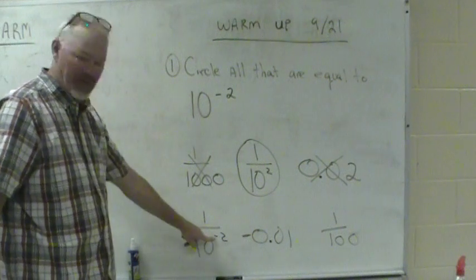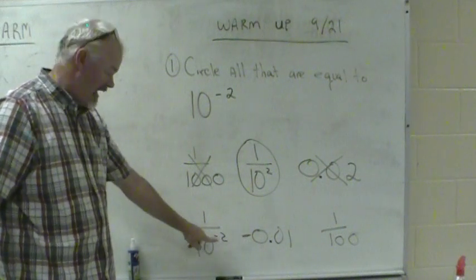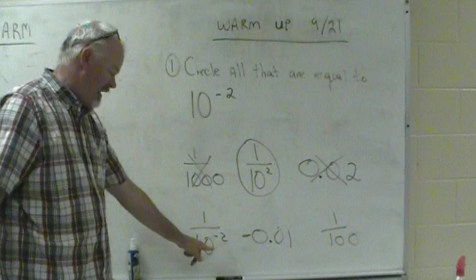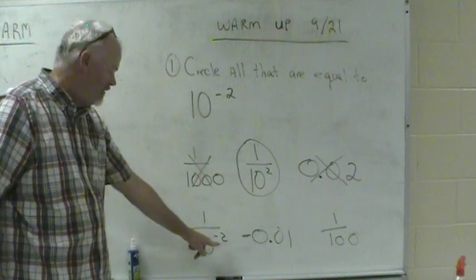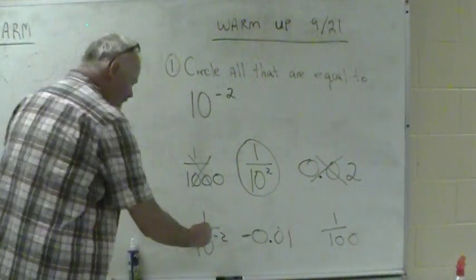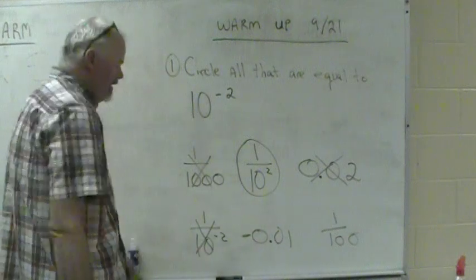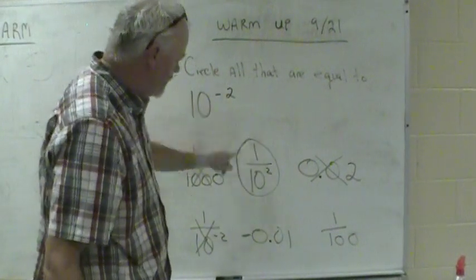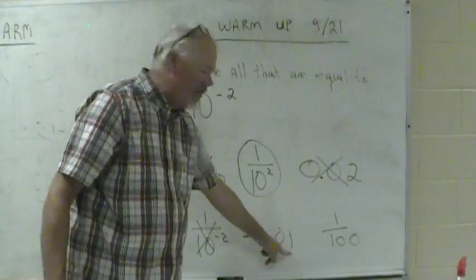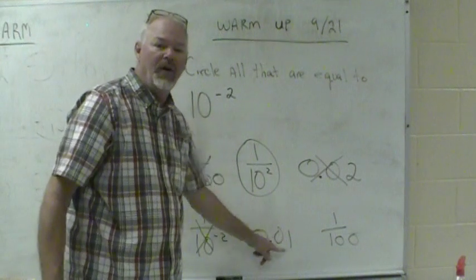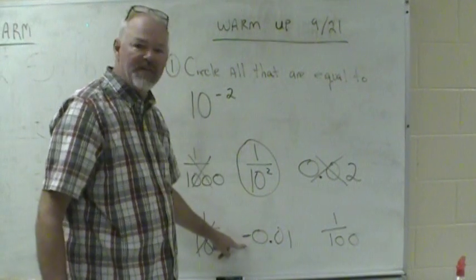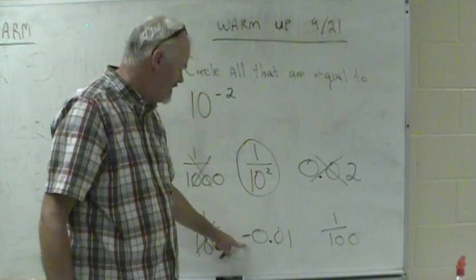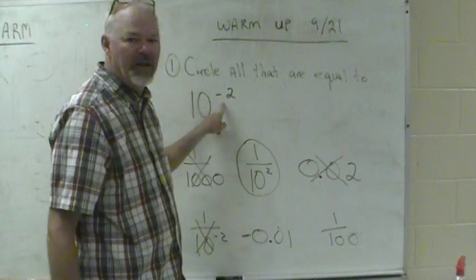All right, let's look at this one. Ten to the negative two. Uh-oh, big red flag here. You can never ever have a negative sign on the bottom in an exponent, not in seventh grade. Never ever. All right, gone. This one, we're looking for two zeros. We got two zeros, we got a one, but uh-oh, there's a negative sign.